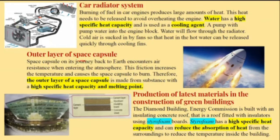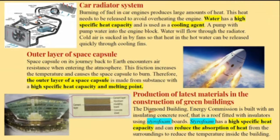Outer layer of space capsule. A space capsule on its journey back to Earth encounters air resistance when entering the atmosphere. This friction increases the temperature and causes the space capsule to burn. Therefore, the outer layer of a space capsule is made from a substance with a high specific heat capacity and melting point. In green building construction, the diamond building energy commission is built with an insulating concrete roof fitted with styrofoam boards. Styrofoam has a high specific heat capacity and can reduce heat absorption to lower the temperature inside the building.